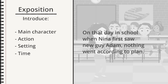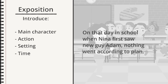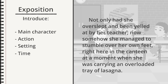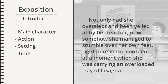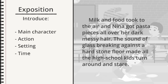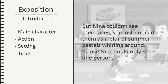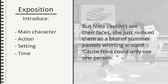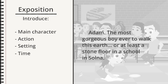Perhaps like this: 'On that day in school, when Nina first saw new guy Adam, nothing went according to plan. Not only had she overslept and been yelled at by her teacher — now somehow she managed to stumble over her own feet, right here in the canteen, at a moment when she was carrying an overloaded tray of lasagna. Milk and food took to the air, and Nina got pasta pieces all over her dark, messy hair. The sound of glass breaking against a hard stone floor made all the high school kids turn around and stare. But Nina couldn't see their faces — she just noticed them as a blur of summer pastels whirling around. Cause Nina could only see one person: Adam. The most gorgeous boy ever to walk this earth. Or at least a stone floor in a school in Solna.'